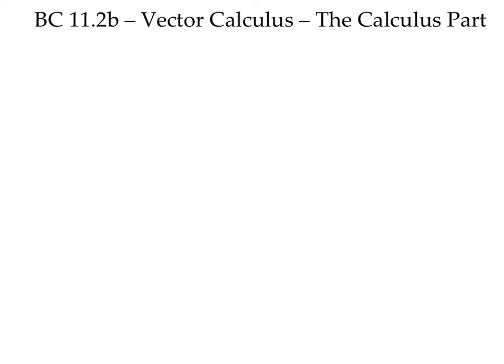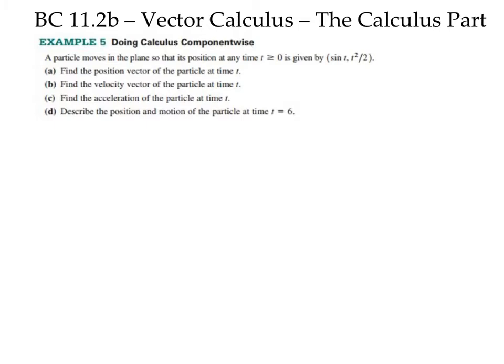So here's our first problem. You'll notice that they say a particle is moving in the plane, its position is given at any time t greater than or equal to zero by the coordinate pair sine of t, t squared over two. So the x value is always given by sine of t and the y value is always given by t squared over two. So maybe you can see now why I say this is just like parametric calculus or parametric math.